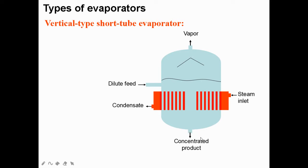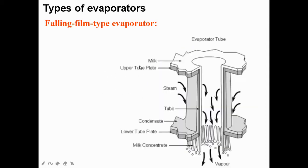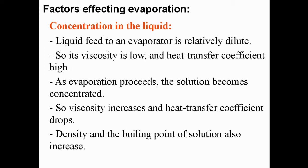Whether you have condensed milk, juice, salt, or sugar, the concentration of the solute in the concentrated product at the bottom will be higher than in the dilute feed. There is also the falling film type evaporator. Now, what are the factors affecting evaporation? Concentration in the liquid is one very important factor.